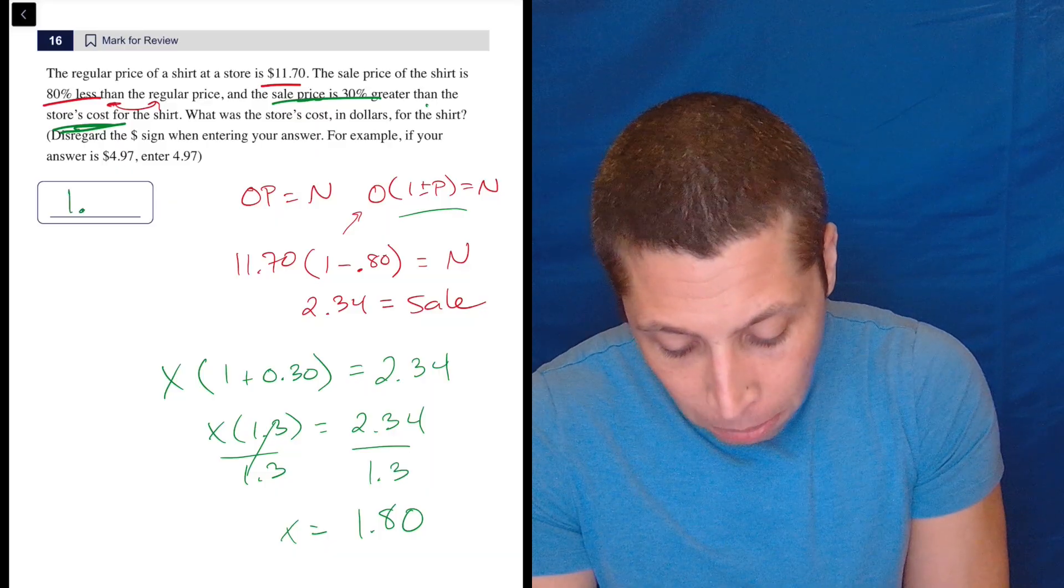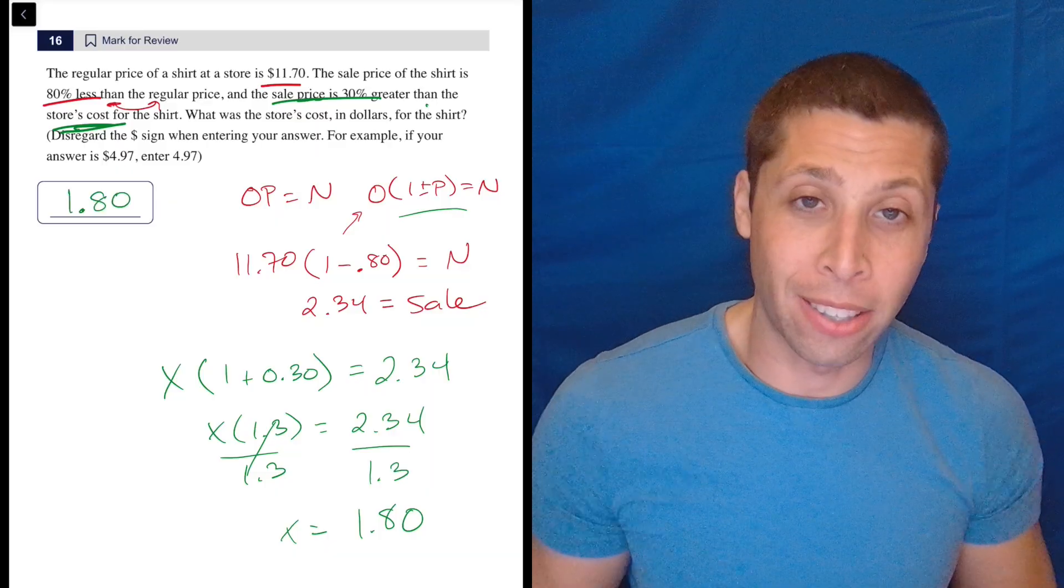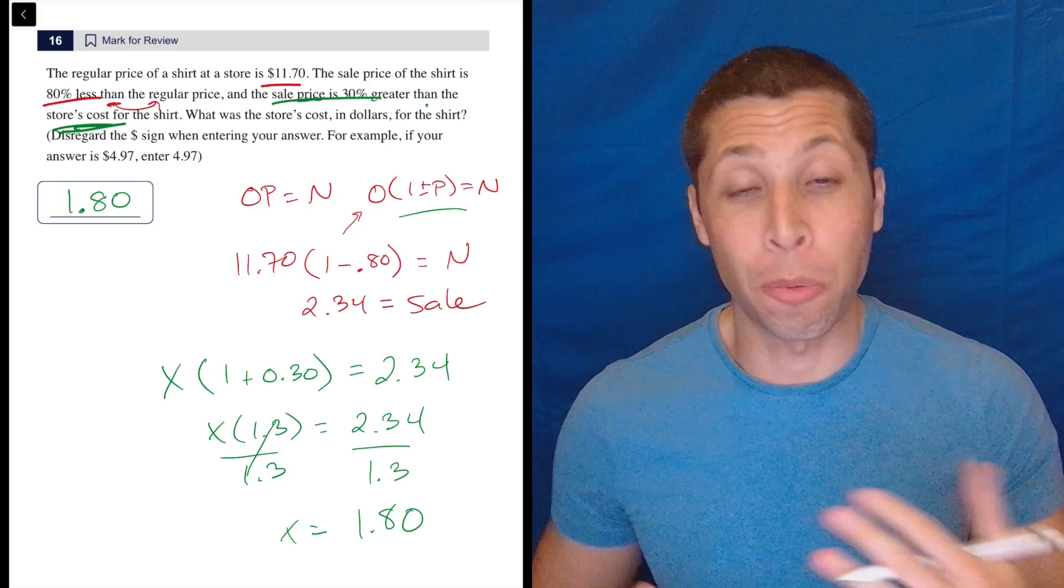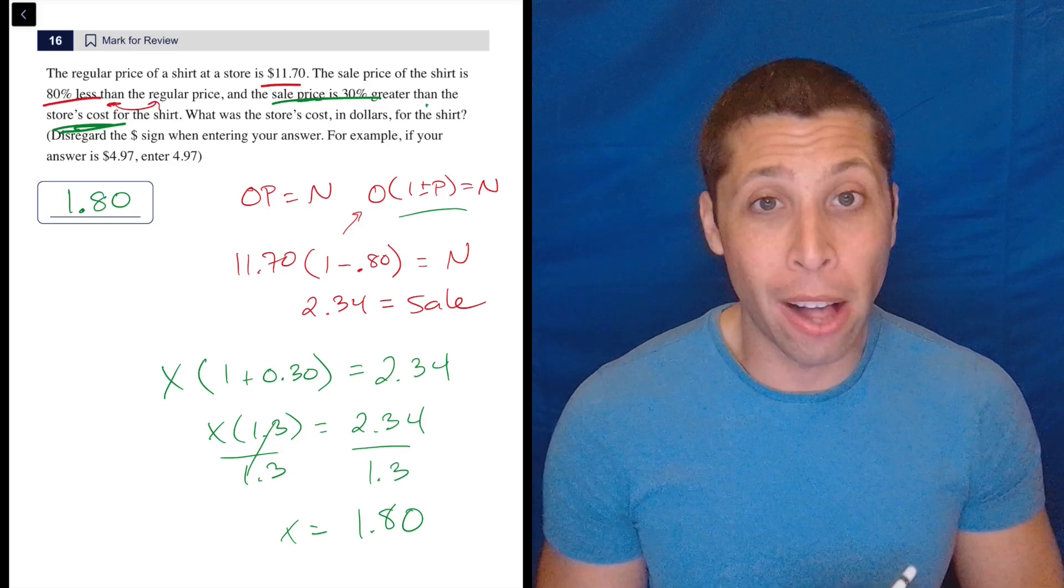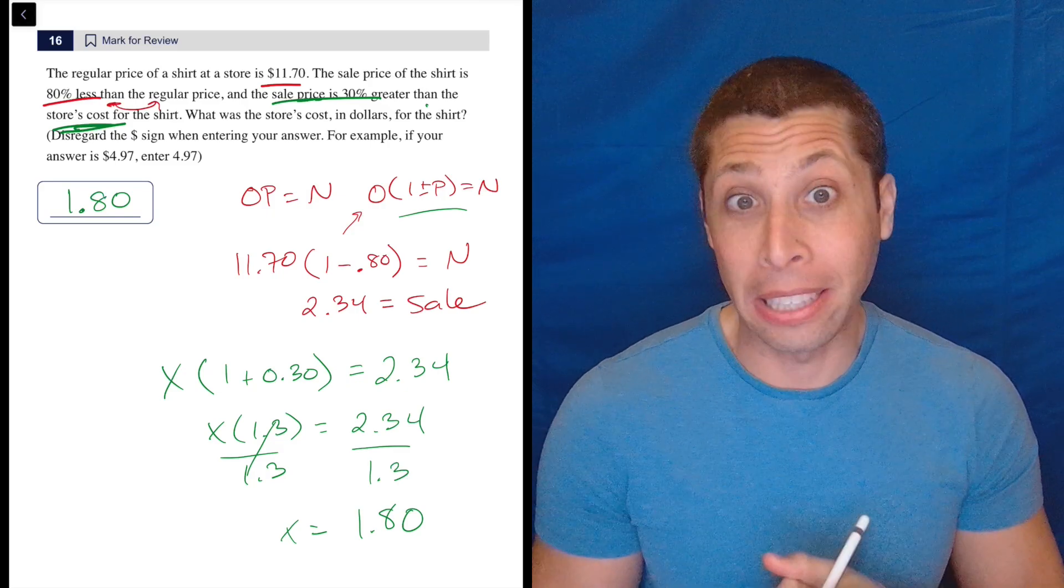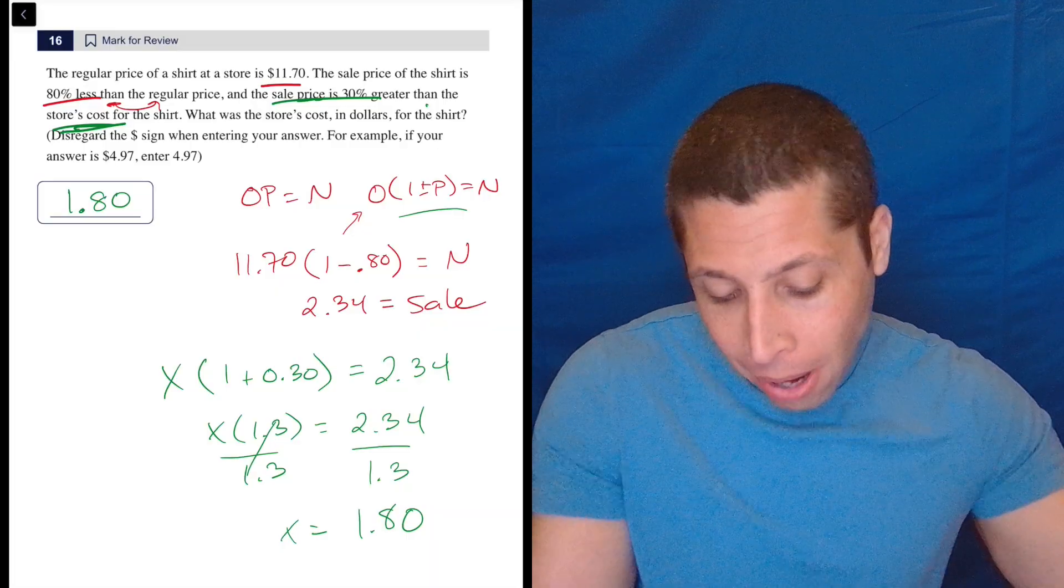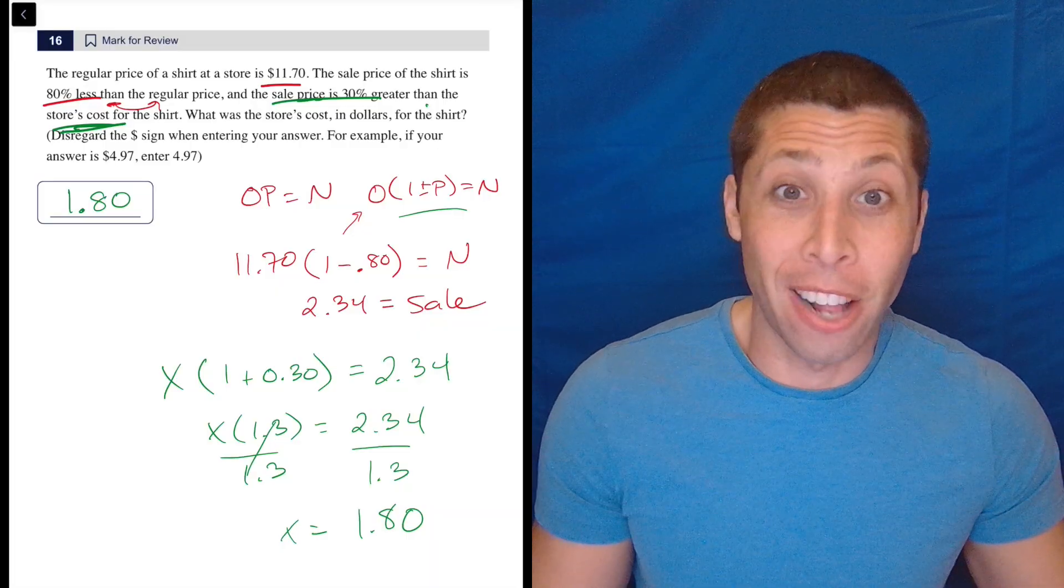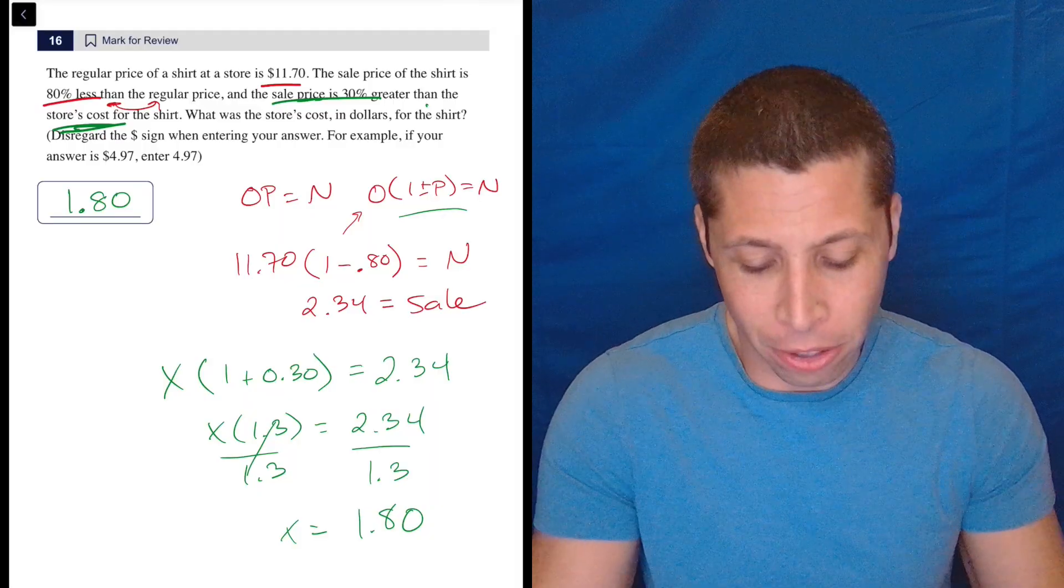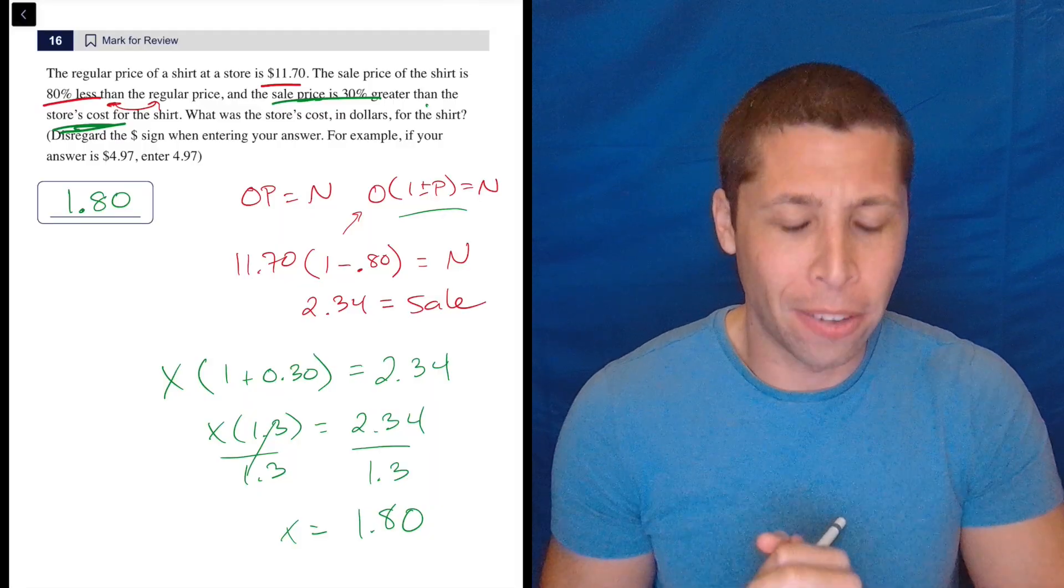But if you bubbled it as 1.8, it's still correct. So basically for these student produced response questions, any equivalent value will work. So I think technically even 18 over 10 should get you an answer here, but it's a price. Put it in dollars and cents. That's just logical. So that way you kind of know what you're doing here. The stories a lot of times help on these questions.